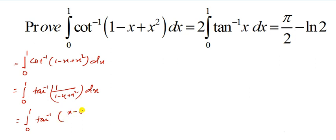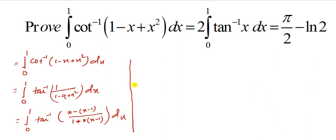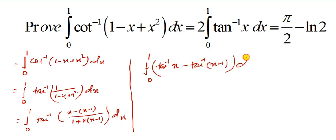In the numerator, we write 1 as x minus (x minus 1), which factors as (1 plus x)(x minus 1) in the denominator structure. Both expressions are equivalent. So 1 is replaced by x minus (x minus 1), and it can be written using the tan inverse addition formula as tan inverse(x) minus tan inverse(x minus 1). This splits the integral from 0 to 1 into: the integral of tan inverse x dx minus the integral of tan inverse(x minus 1) dx.